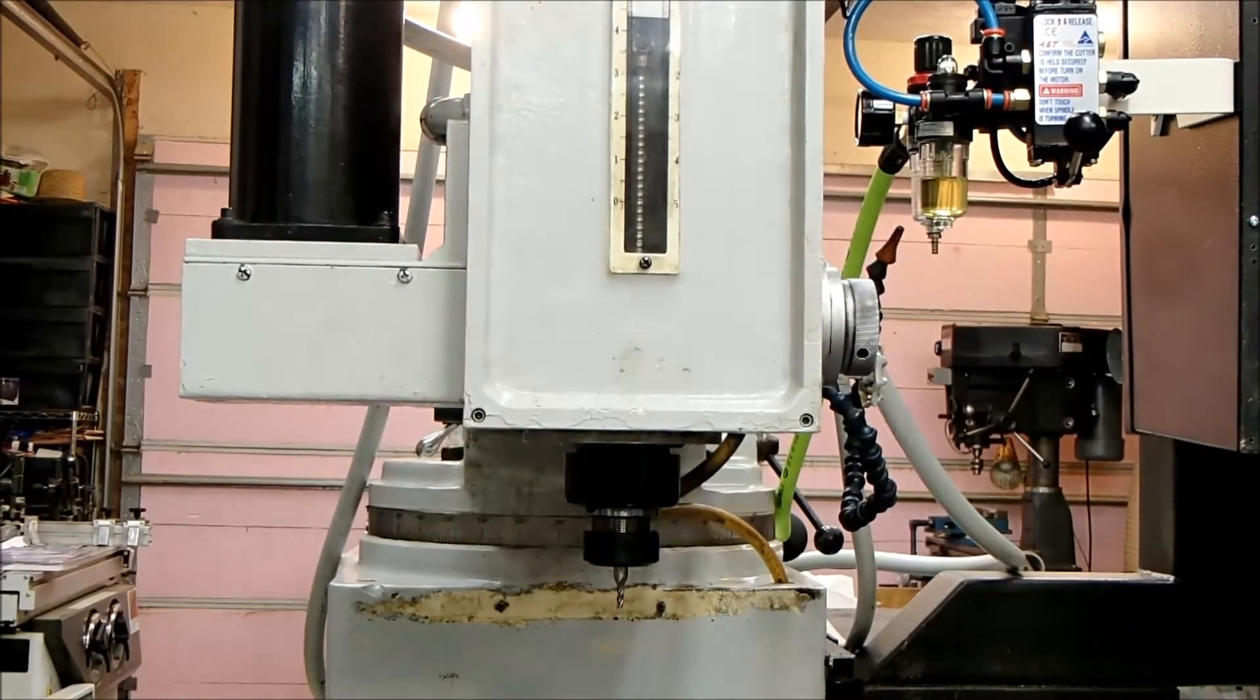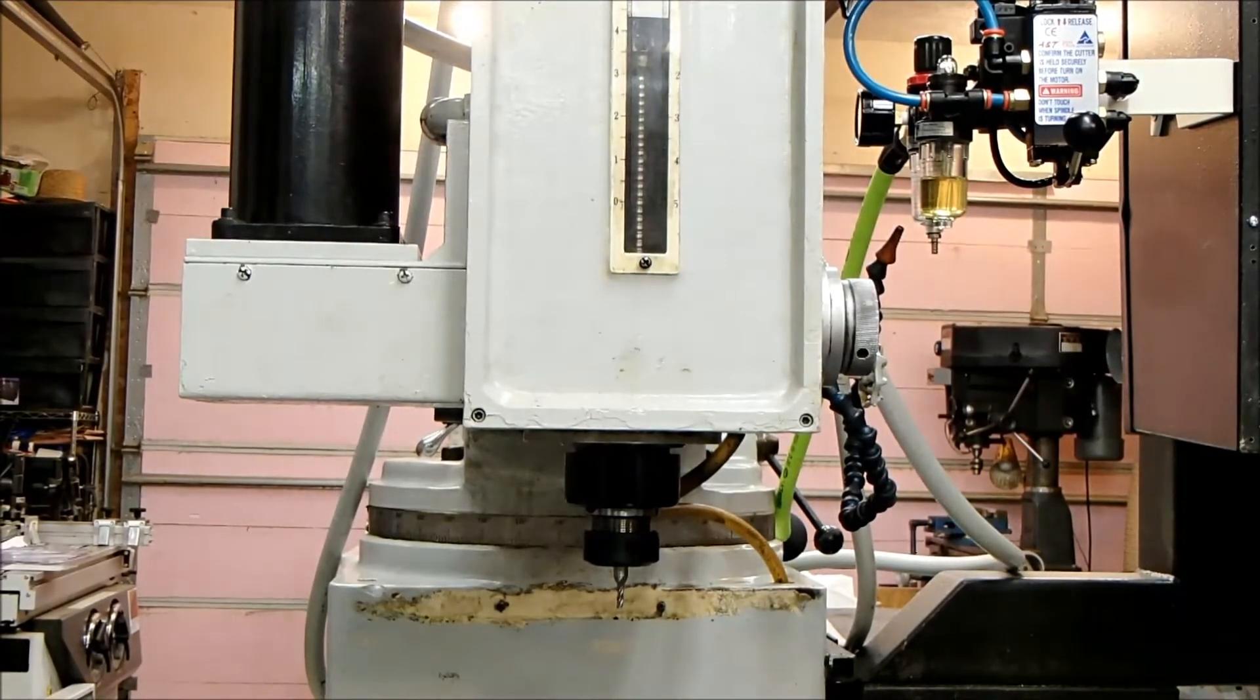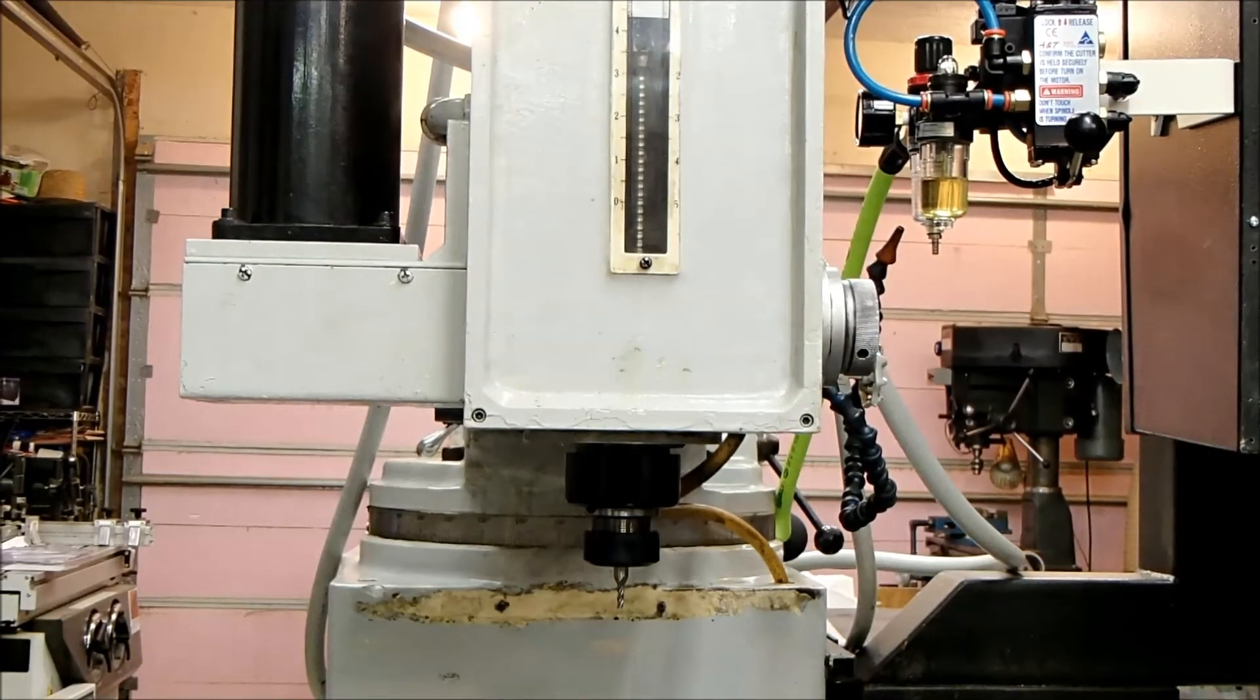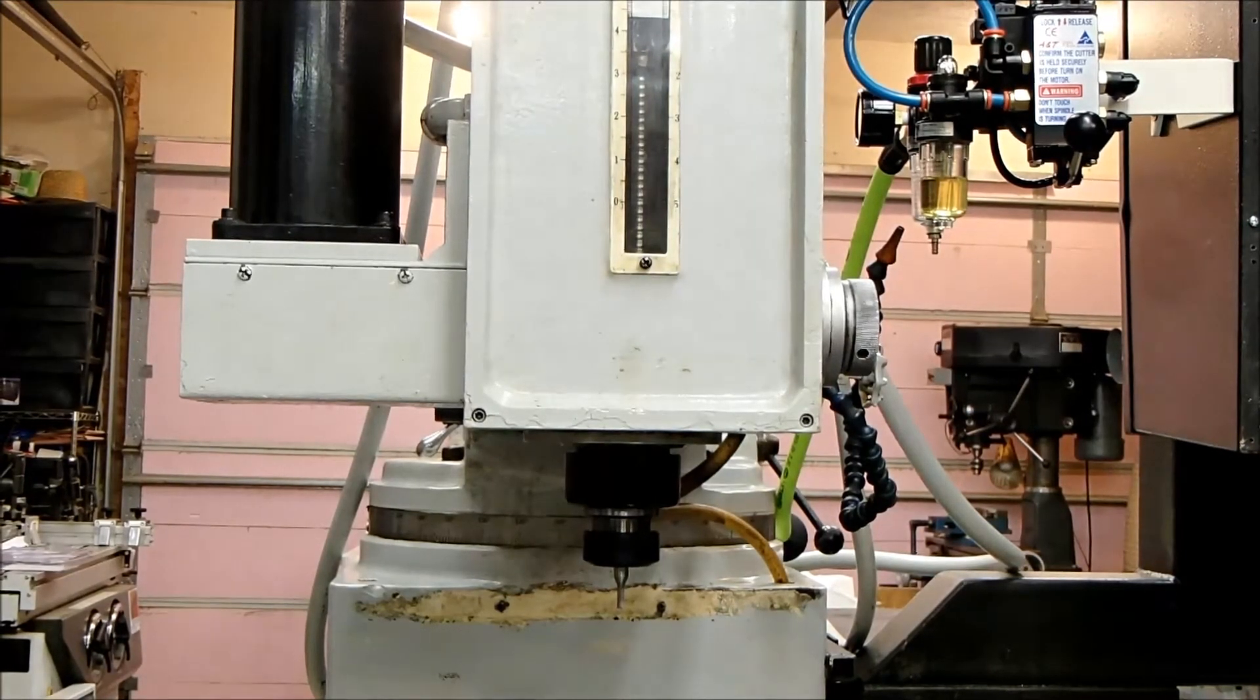So it's a pneumatic ratchet basically at the top that screws the draw bar down inside of the tool. Power the spindle up.